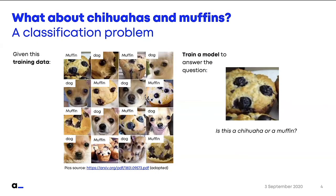So what about the title with the chihuahuas and muffins? I just want to take it as a comparison with the recommendation problem. This muffins-and-dogs dataset is a famous dataset for visual recognition. The dataset contains those images with labels saying whether the image has a muffin or a dog. The goal, given this training data, is to have a model that can answer the question: is this rather a chihuahua or a muffin? Well, we can see it's a muffin, but training a model on this data is not easy.